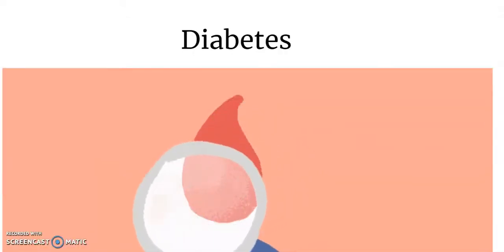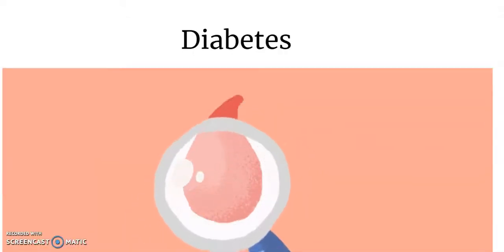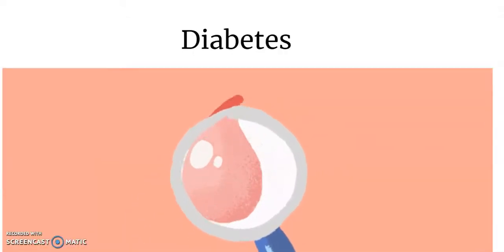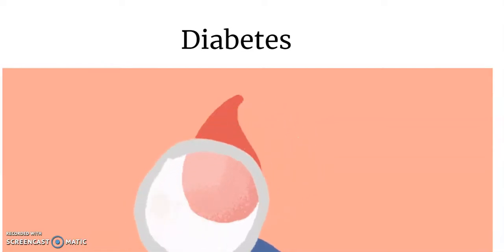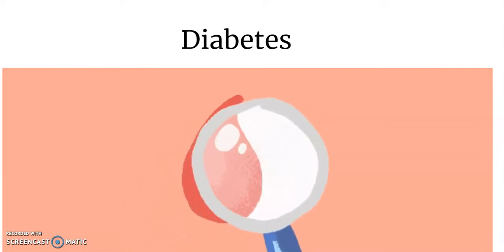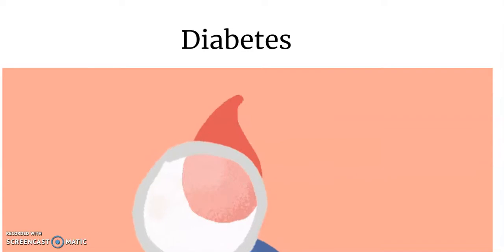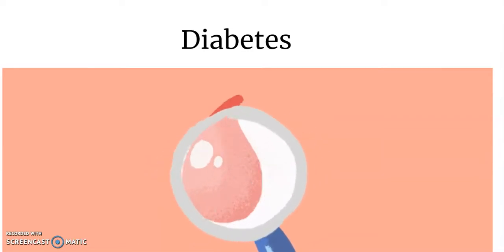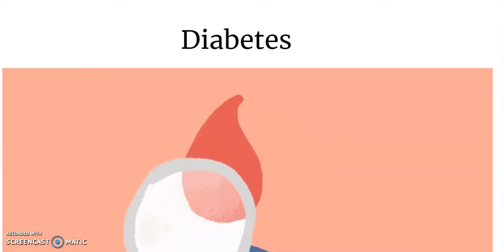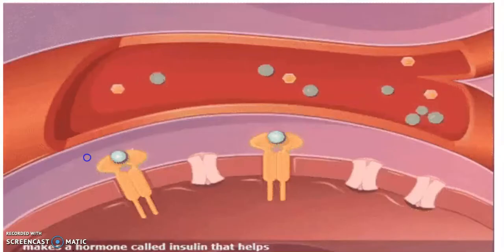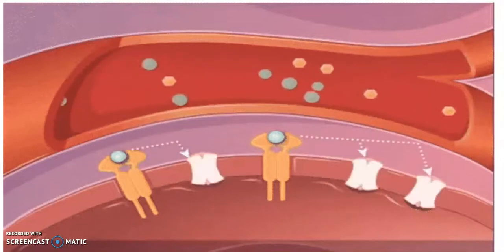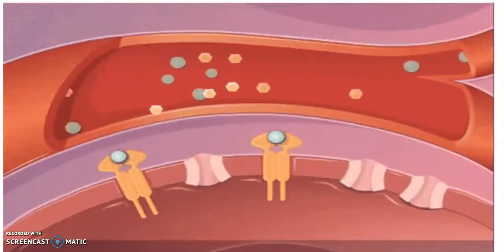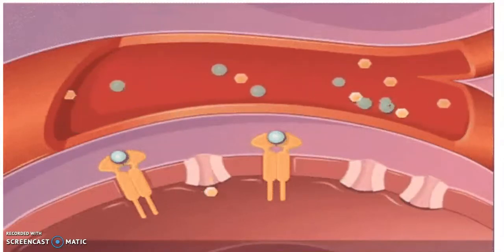Diabetes: when there is excess body fat, insulin is less effective at getting glucose — the body's main source of energy — into cells. More insulin is needed to maintain a normal blood sugar level.